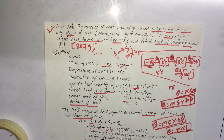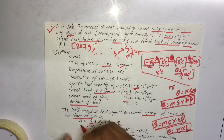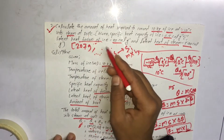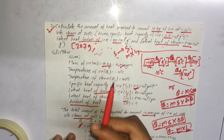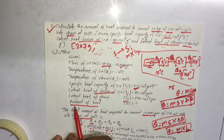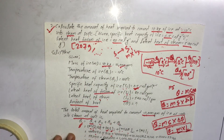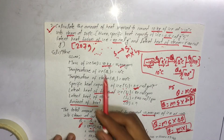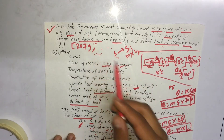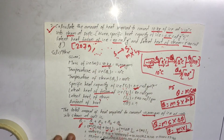The total amount of heat required is 7.25 times 10 to the power of 6 calories. This is how much heat the question requires: 7.25 × 10^6 calories.